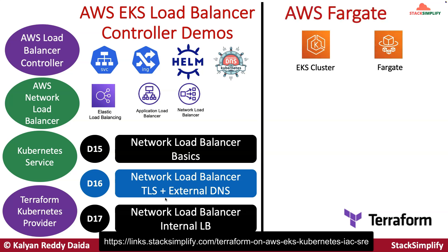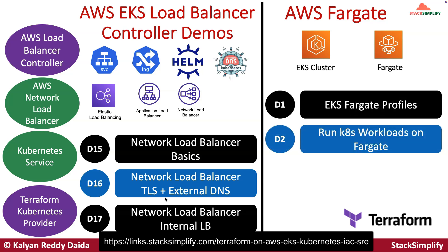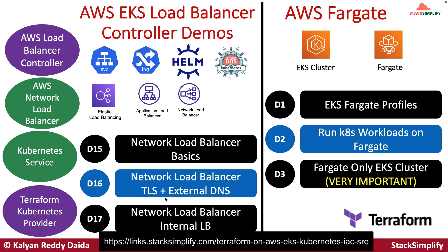After that we will also implement AWS Fargate. We will create EKS Fargate profiles and run Kubernetes workloads on Fargate. We will also create a Fargate-only EKS cluster, which requires migrating the CoreDNS pod to Fargate and ensuring whatever is deployed to the kube-system namespace also runs in Fargate. At that point the cluster qualifies as a Fargate-only EKS cluster, and we will implement that demo in detail.